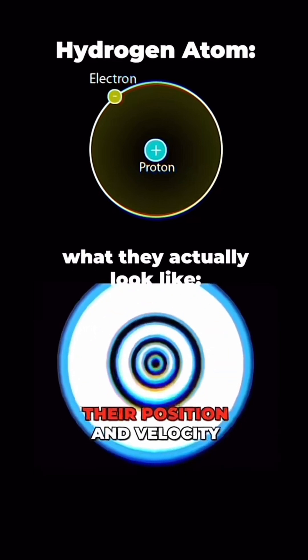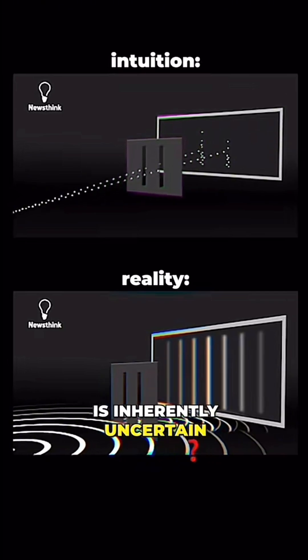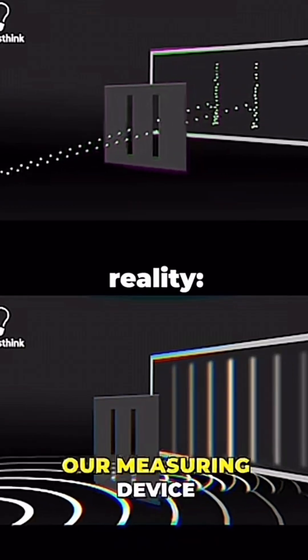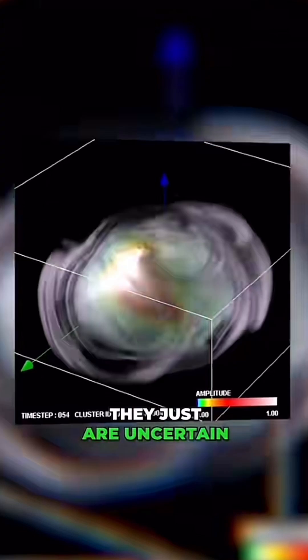The position and velocity is inherently uncertain, and that's not a problem with our measuring devices. It is built into the very nature of quantum particles. They just are uncertain.